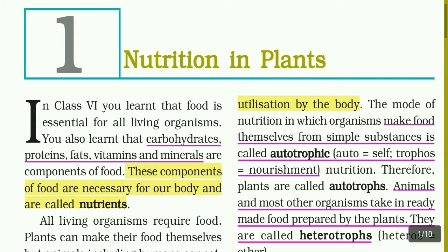In class 6, you learned that food is essential for all living organisms. You also learned that carbohydrates, proteins, fats, vitamins and minerals are components of food. These components of food that are necessary for our body are called nutrients.